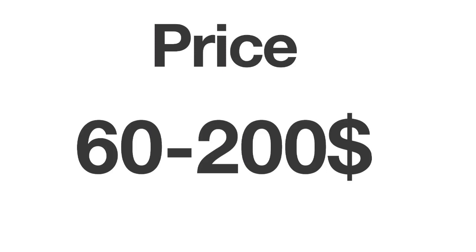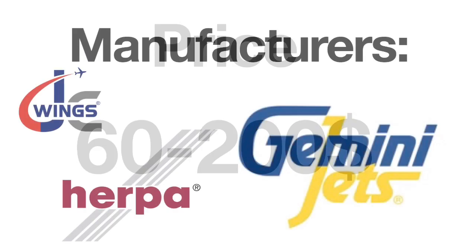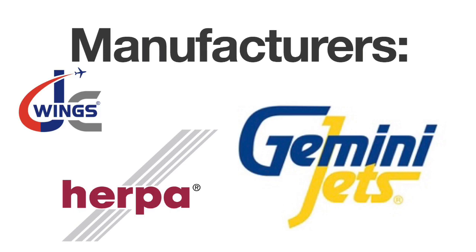Now the problem with 1:200 scale is really the price — they cost between $60 and $200 US dollars, which in my opinion is a lot of money, but if you can afford it, go ahead. Manufacturer-wise there is also a good choice: you have JC Wings, Gemini Jets, and Herpa, among others. Just Google it and you'll find it. Like 1:400, there are a lot of collectors, so you won't have a problem finding models.